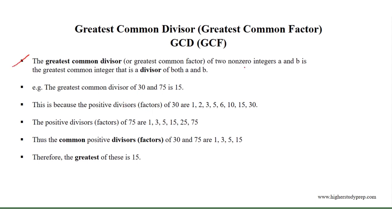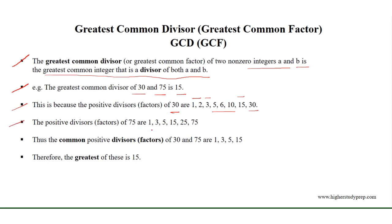The greatest common divisor of two non-zero integers A and B is the greatest integer that is a divisor of both A and B. For example, the greatest common divisor of 30 and 75 is 15. This is because the positive divisors of 30 are 1, 2, 3, 5, 6, 10, 15, and 30 itself, and the positive divisors of 75 are 1, 3, 5, 15, 25, and 75 itself.